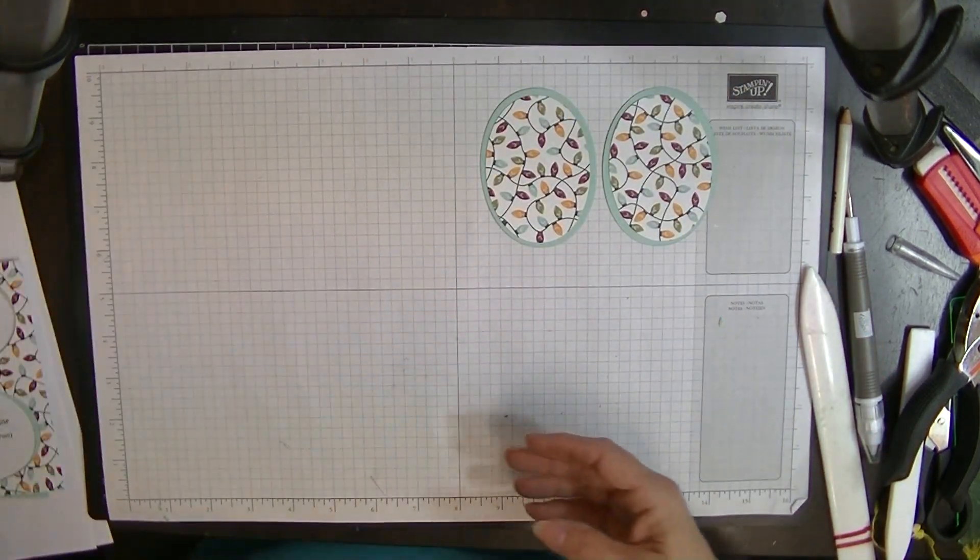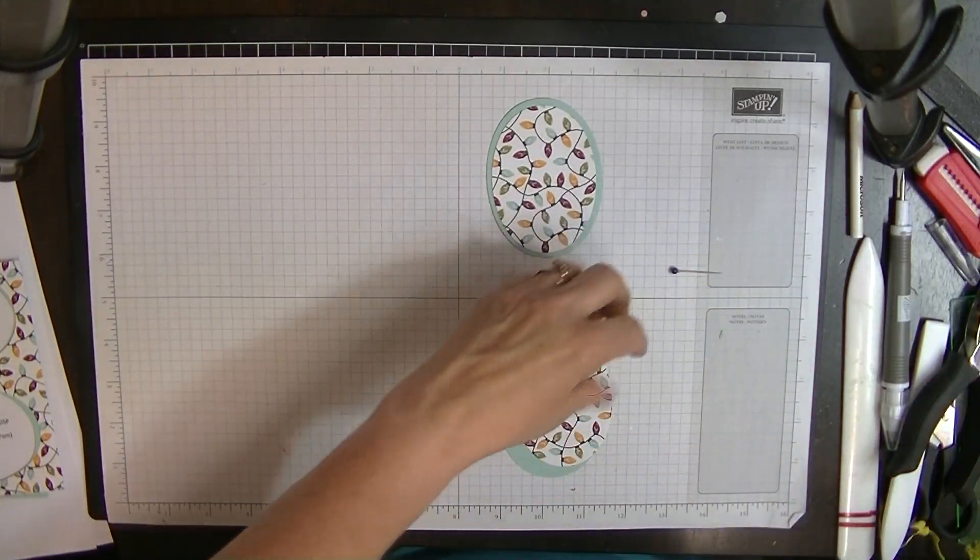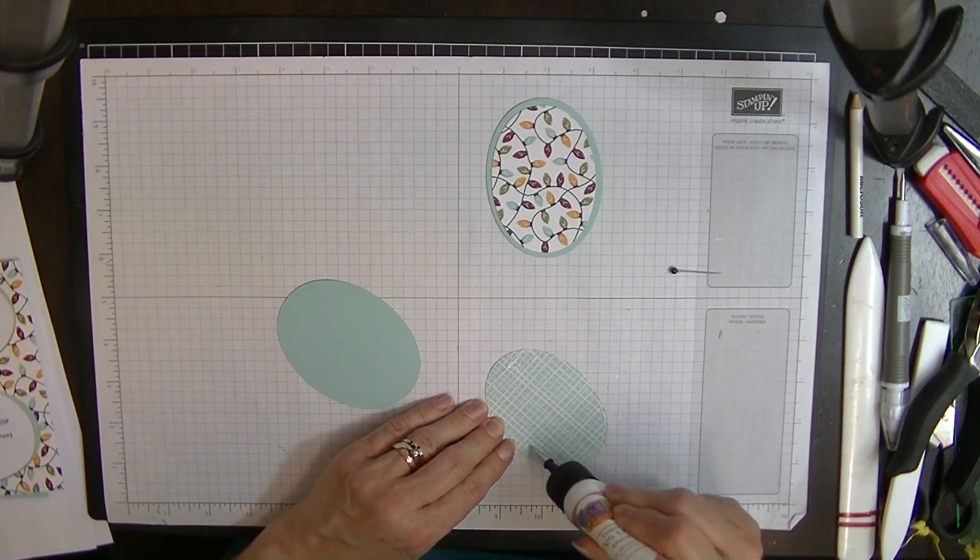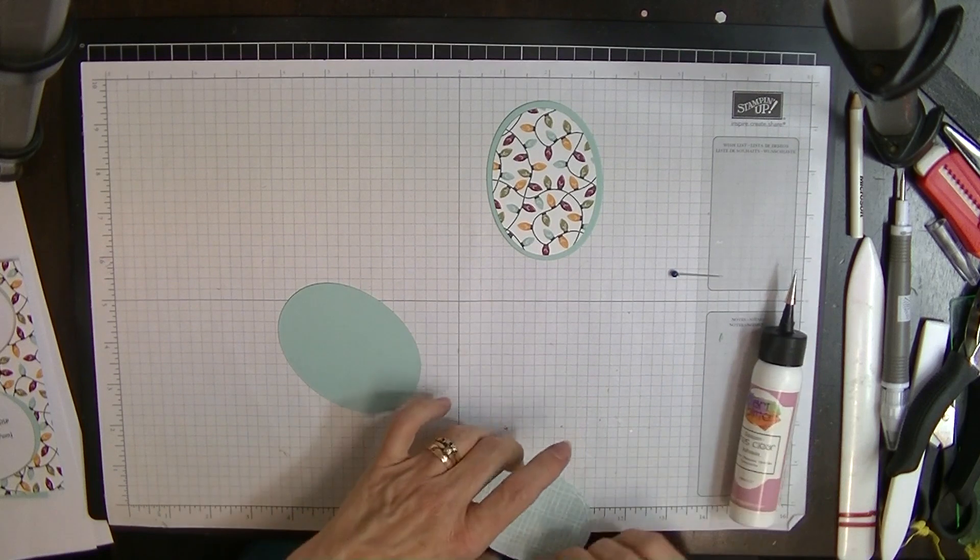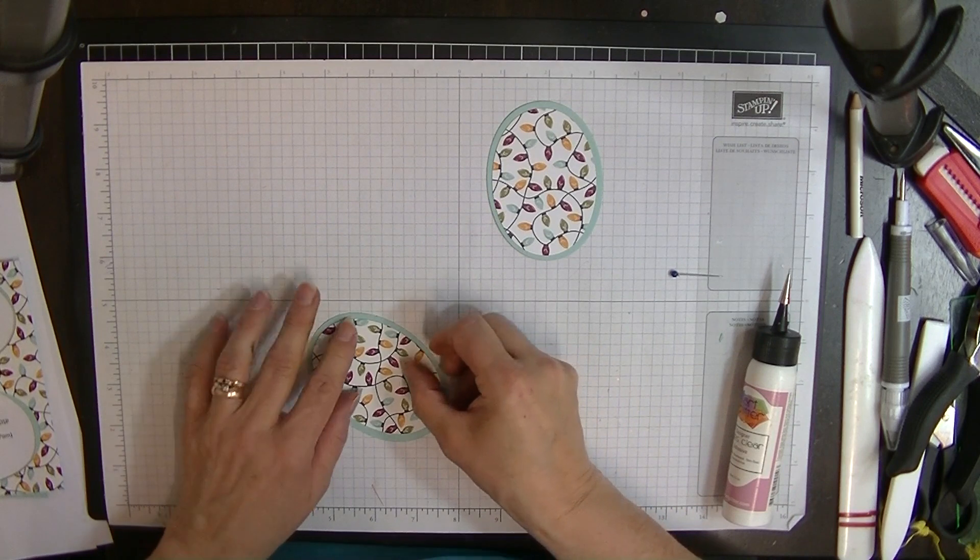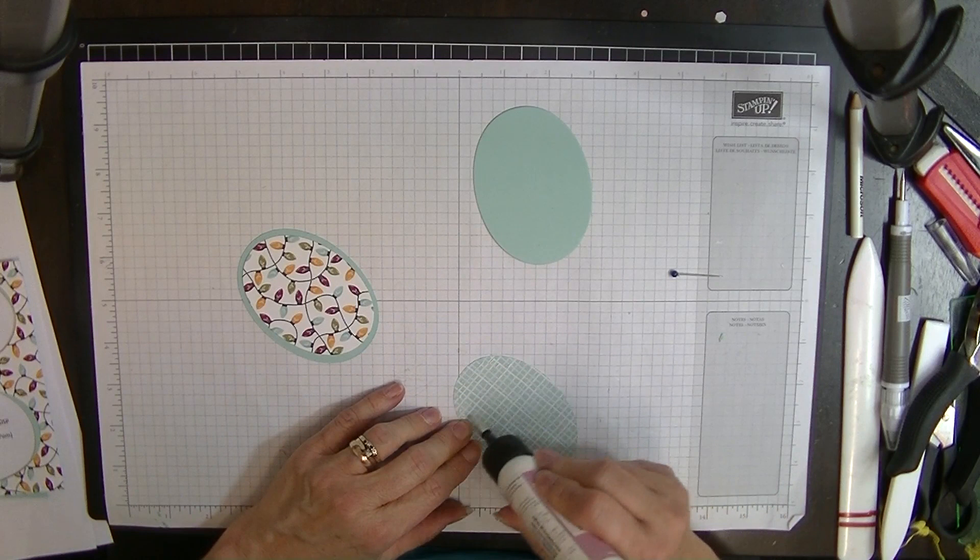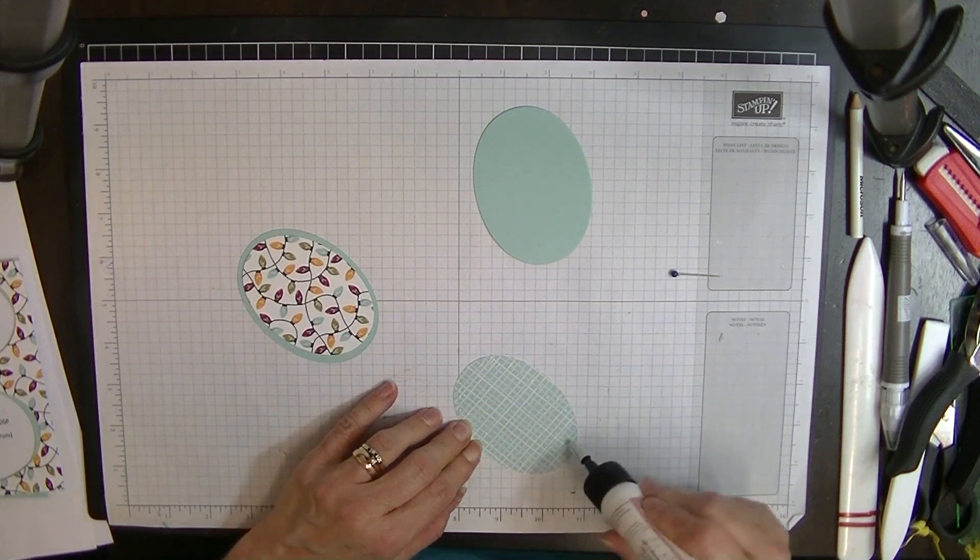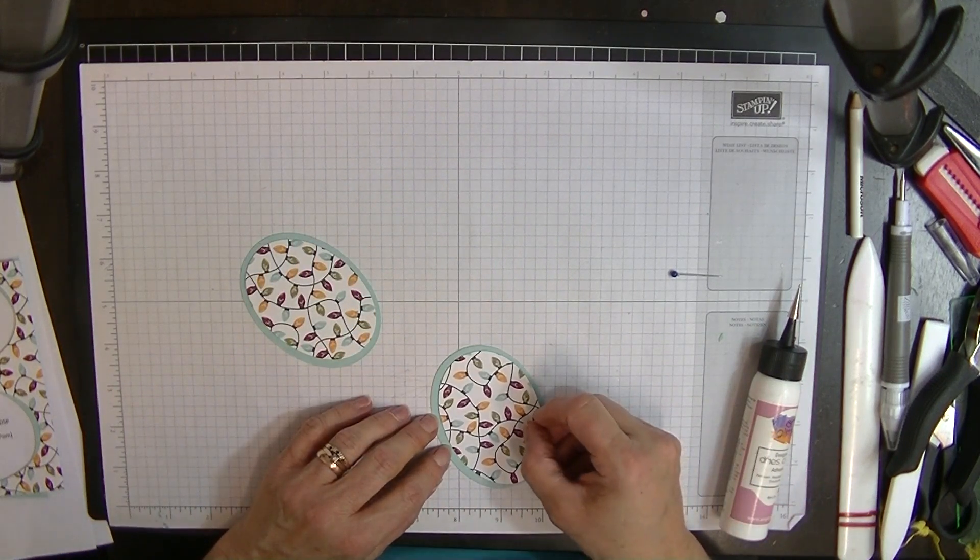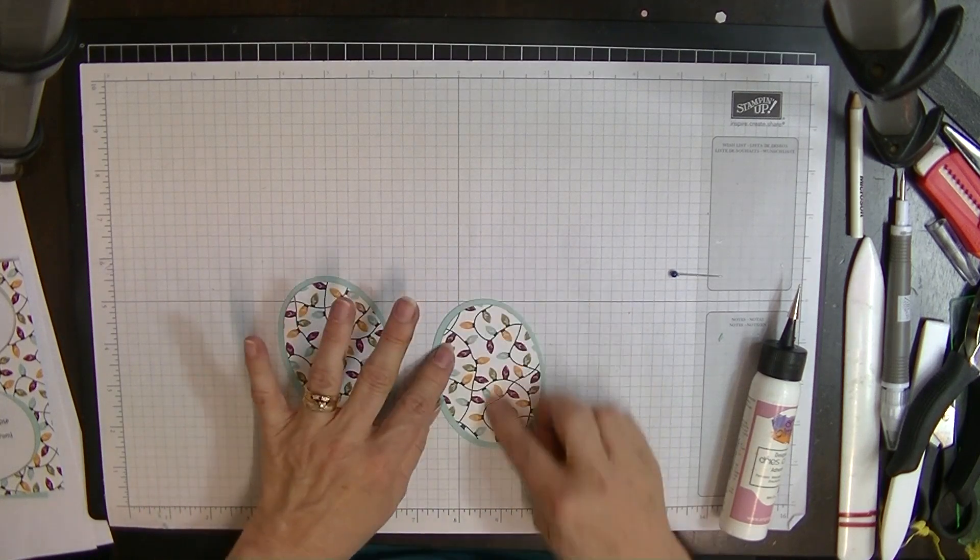And what we're going to do first is we're going to glue these two pieces of ovals together. Making sure that you've got them quite even around there, like so. Now if you've got a directional pattern, make sure that you get directions so that it's long ways on the oval. Like so, this way.